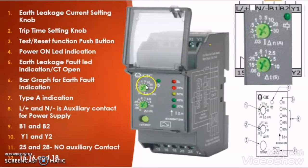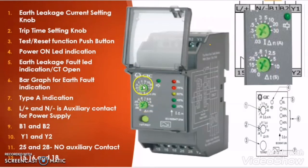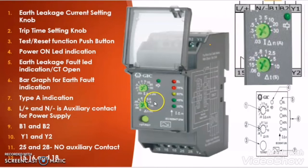If this 10 Ampere of earth leakage current persists for more than 5 seconds, then the earth leakage relay will give command to the circuit breaker or to the contactor to trip or to break its contact. So the time setting provides a hold time for the earth leakage current, and when that earth leakage current is prolonged beyond the set time, the earth leakage relay will give command to break the circuit.